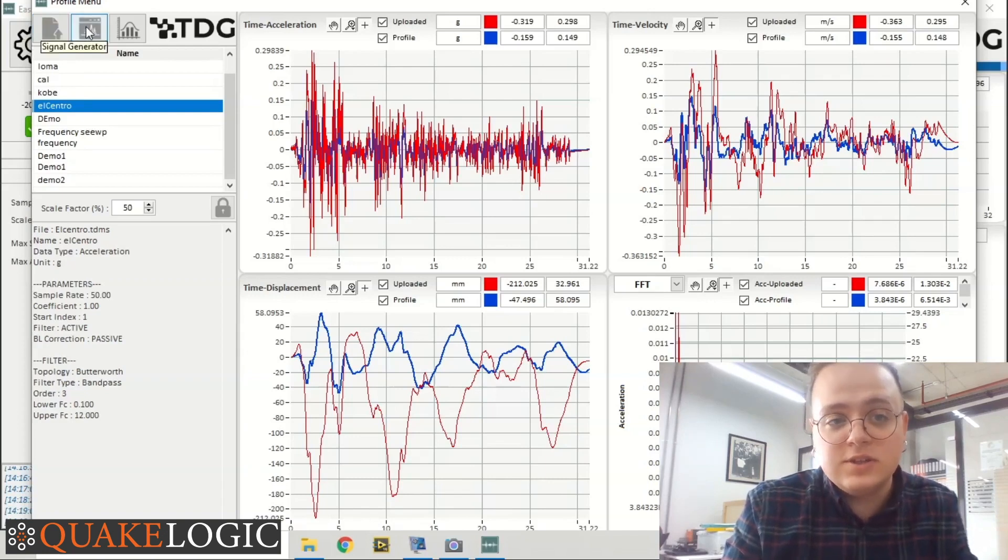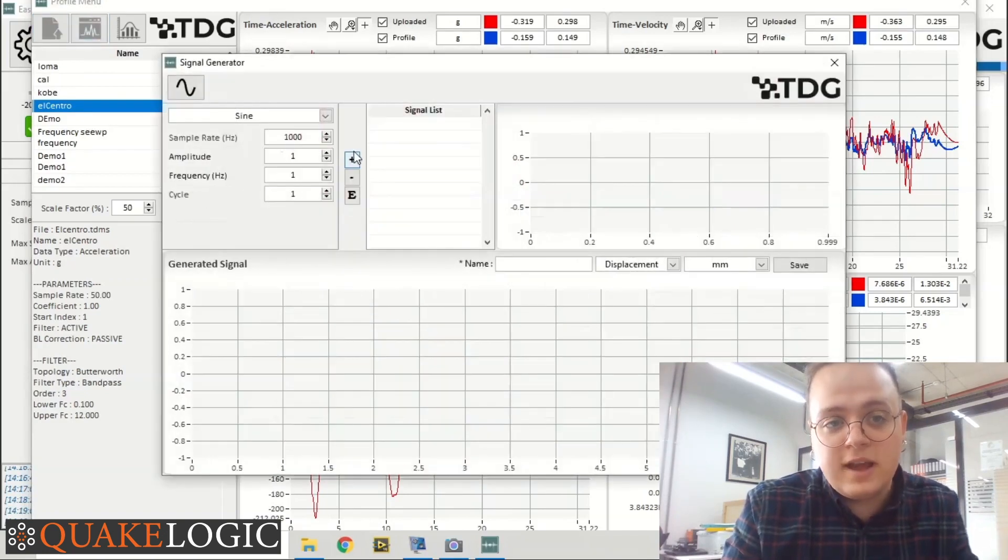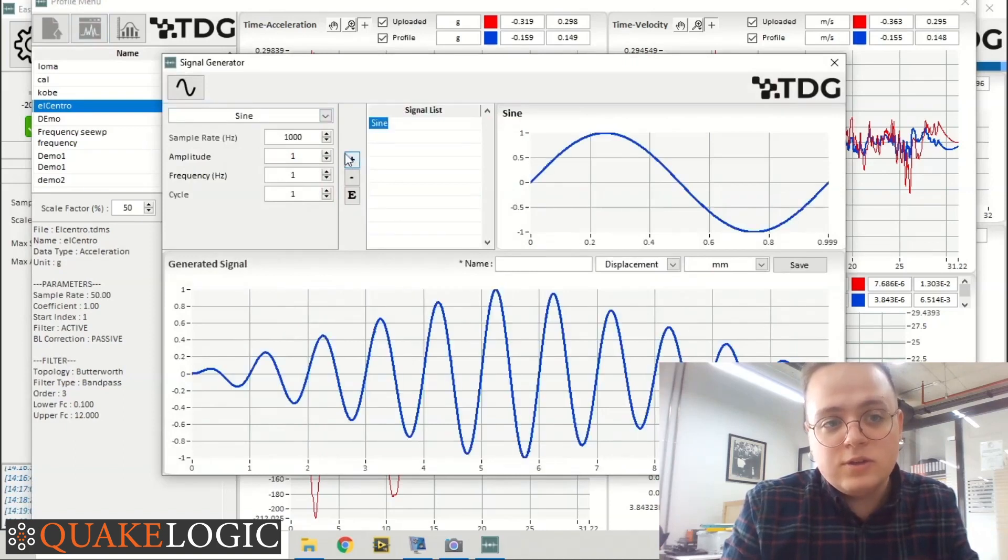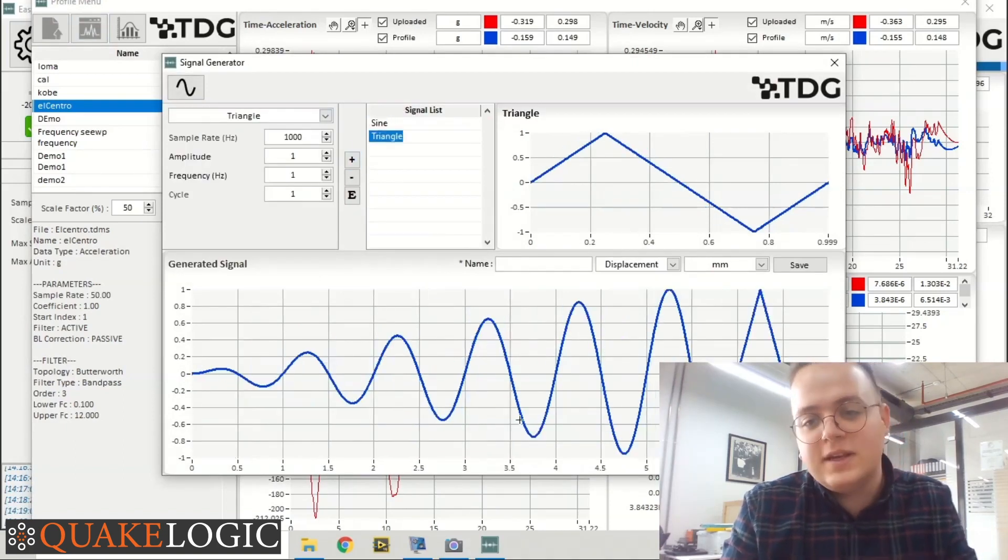You can also create a signal by using the signal generator. For example, you can add a sinusoidal wave or a triangular wave, and this will be the waveform that you will send to the shake table. You can change all the parameters and create a specific signal by using the signal generator.